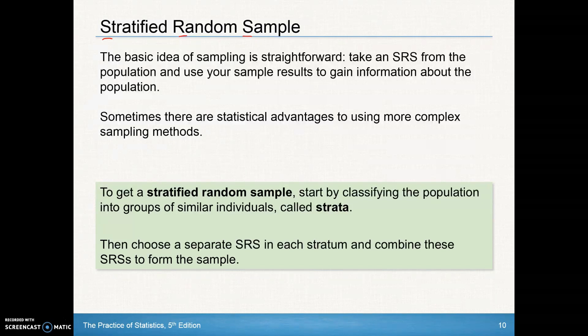We will look at another type of sampling that's good — it's not bad, but it's not the best. The stratified random sample. The basic idea of sampling is pretty straightforward: you want to take an SRS from the population and use your sample results to gain information about the population. Sometimes there are statistical advantages to using more complex sampling methods — it might be easier and more cost effective. An SRS is still the best way to sample.